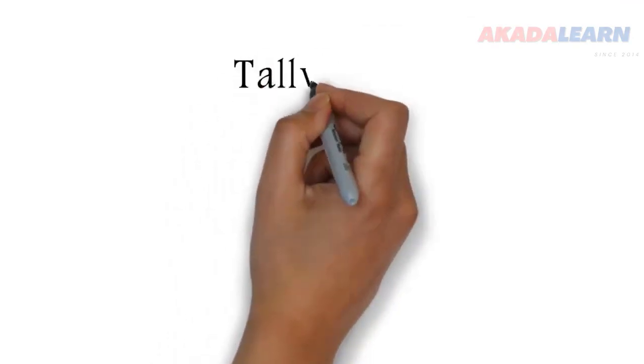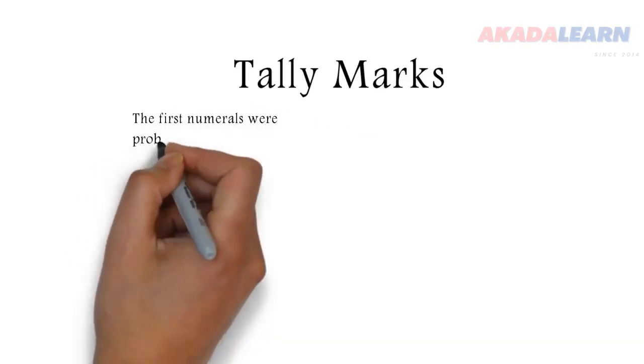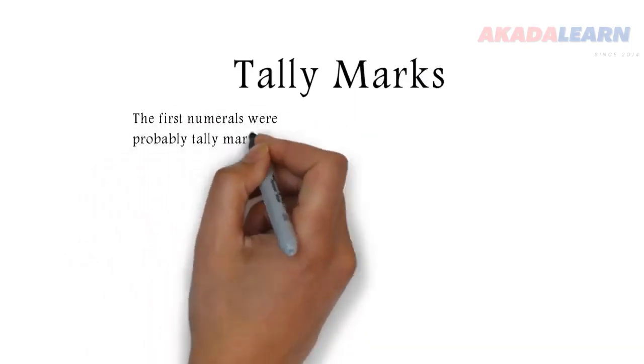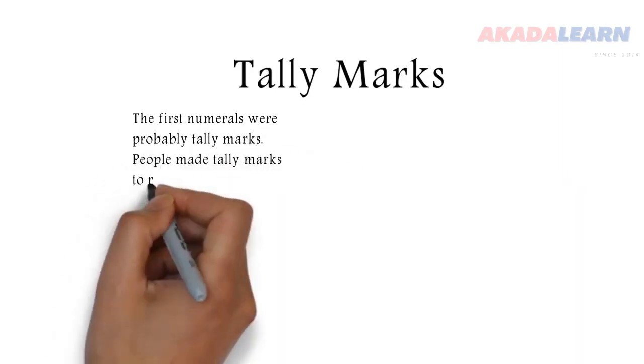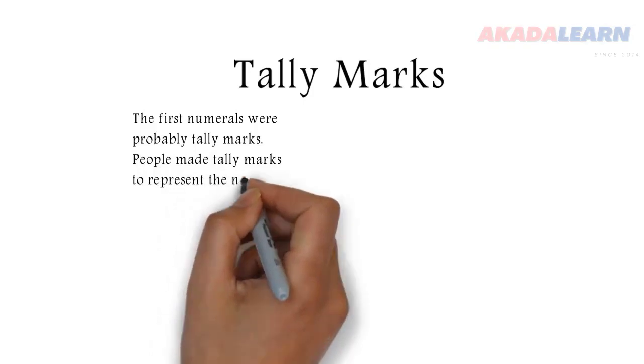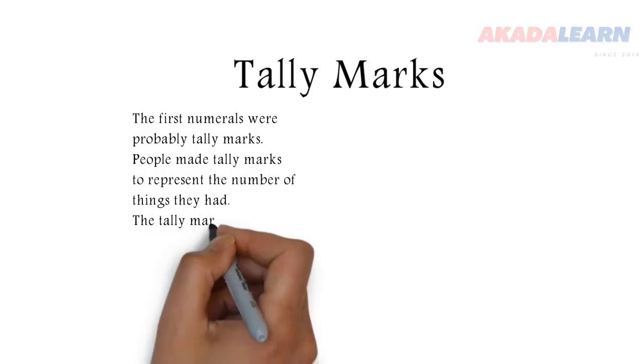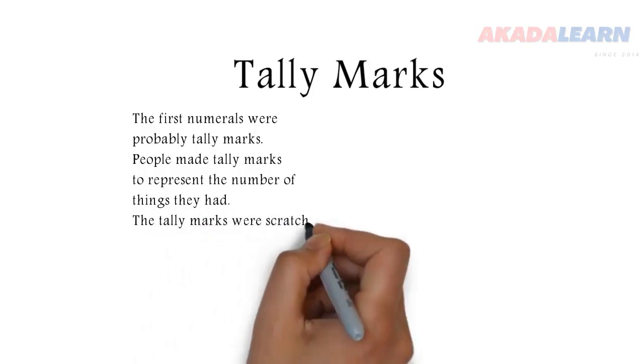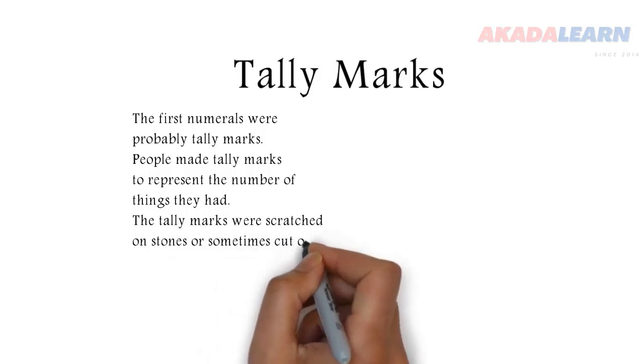Now we look at tally marks. The first numerals were probably tally marks. People made tally marks to represent the number of things they had. The tally marks were scratched on stones or sometimes cut on sticks.